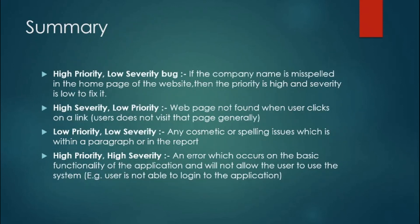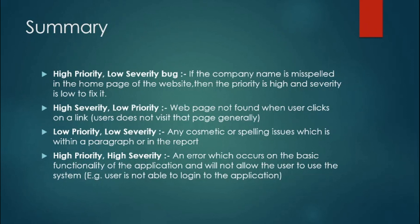To recap all combinations: high priority low severity — company name is misspelled; high severity low priority — a web page not found because it's planned for a future release; low priority low severity — cosmetic error like a spelling mistake in the privacy policy; high priority high severity — login functionality broken or user not able to add item to the cart. Remember these examples for your interviews.